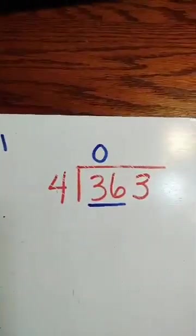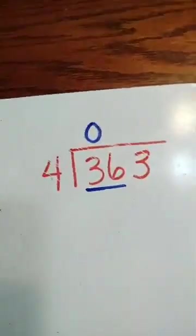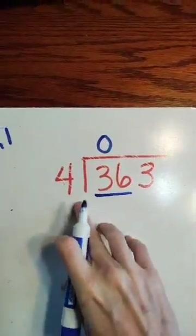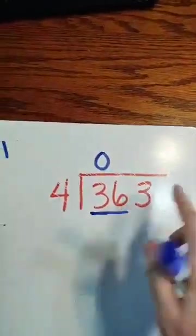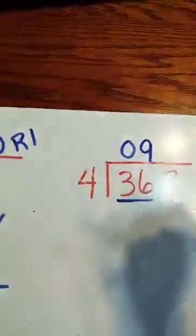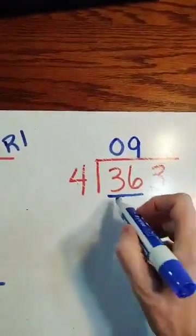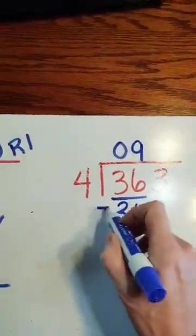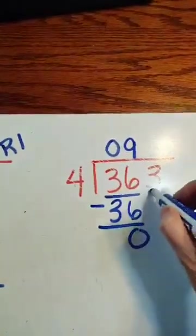Does 4 go into 36? Excuse me, my allergies. Yes, 4 goes into 36, 9 times. 4 times 9? 36. We subtract, we get 0, we bring down.